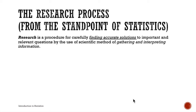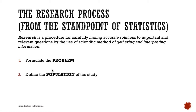The research process, from the standpoint of statistics, has three basic steps. First, you need to formulate your research problem. After you formulate that question, you then define your population of the study. After defining your population, you will identify the variables of the study. We're going to talk about them one by one.